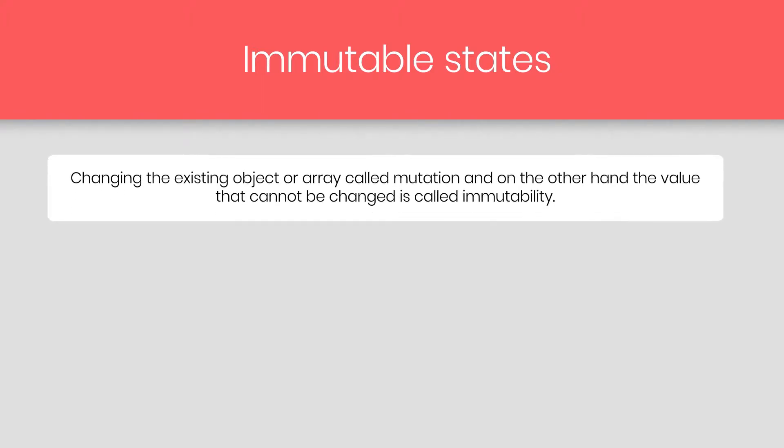In this lecture, we are going to learn how to work with immutable states. Let me first explain what is the meaning of immutable. Changing the existing object or array is called mutation, and on the other hand, the value that cannot be changed is called immutable. Immutable means something that cannot be changed.